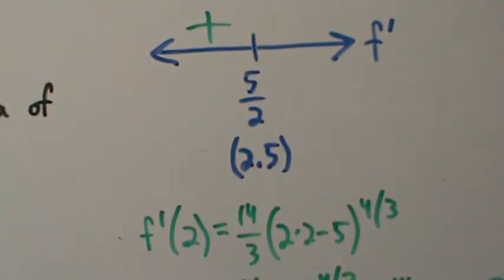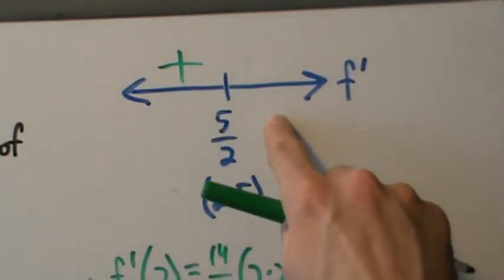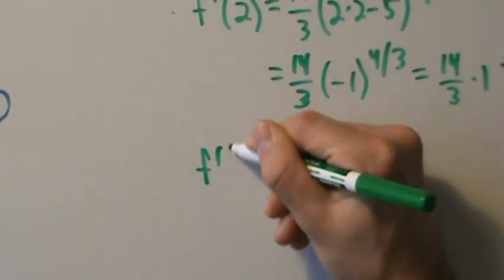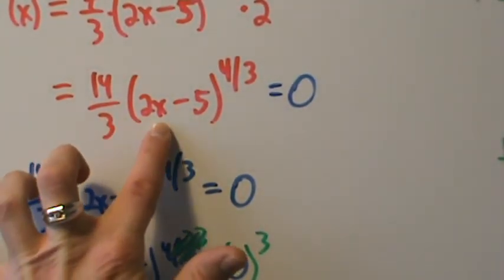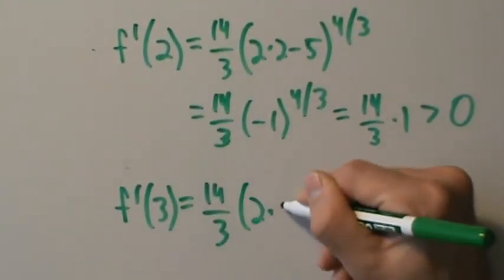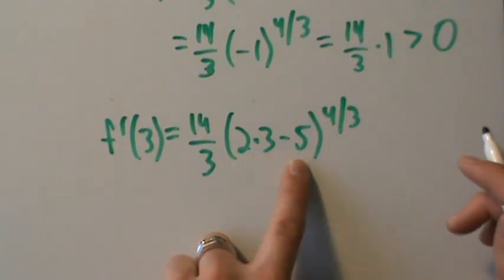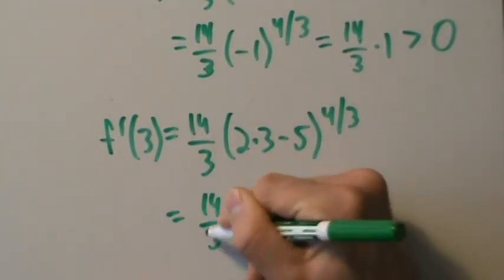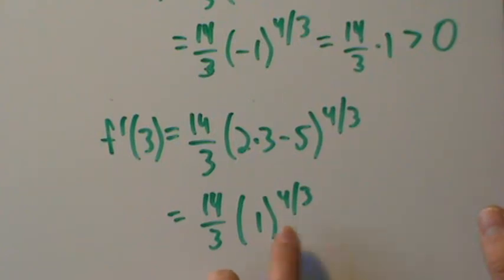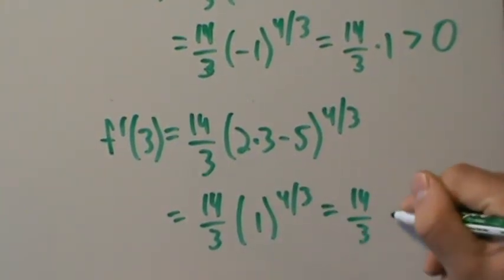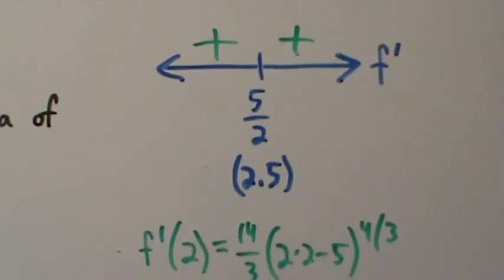For the second interval (x > 2.5), we pick x = 3. Then f'(3) = 14/3 times (2 times 3 minus 5) to the 4/3 = 14/3 times (1) to the 4/3. Since 1 to any finite power is 1, this equals 14/3, which is also positive. So the derivative is positive in this interval as well. That completes step 3.